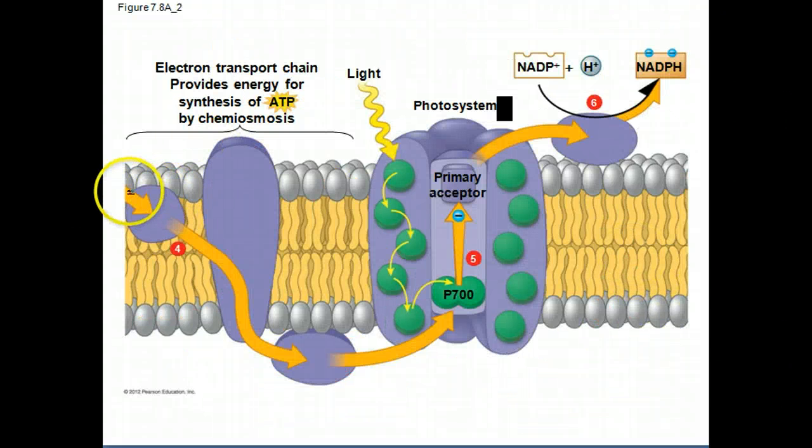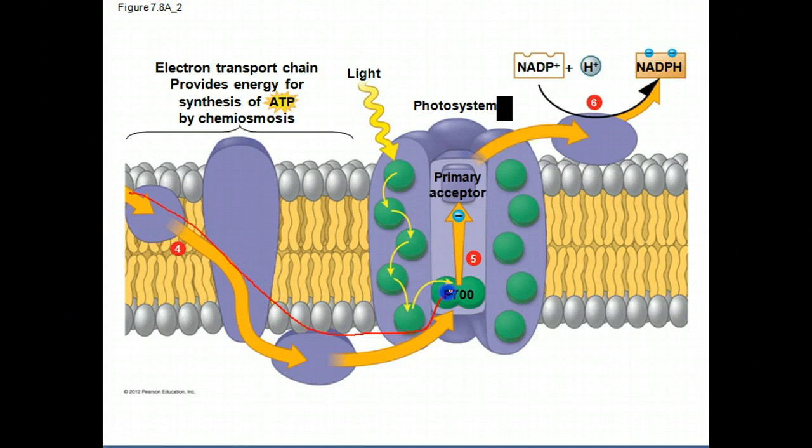Continuing this picture, it passes it down here, ultimately giving them to the next photosystem. You don't need to know that this is P700. It gives it to the next photosystem's reaction center chlorophyll.